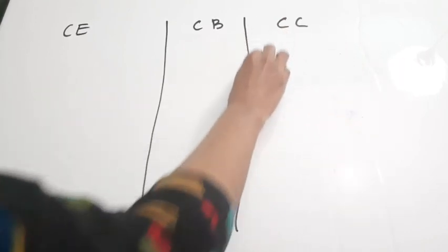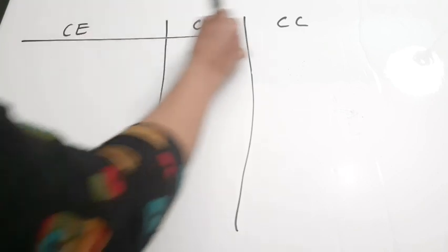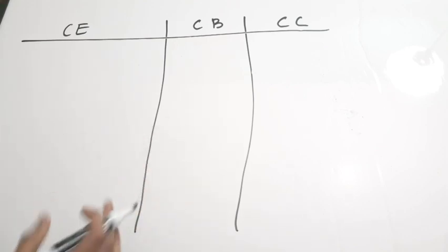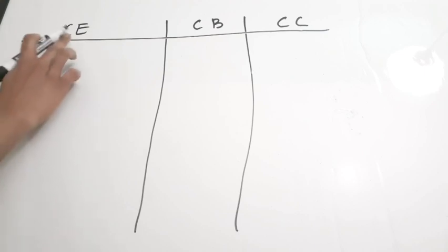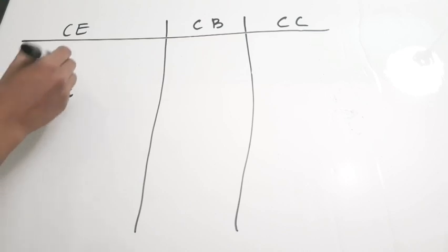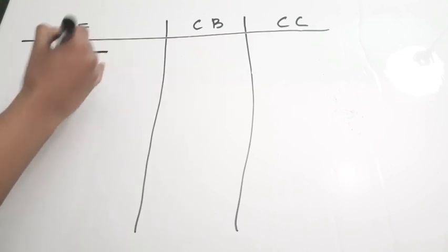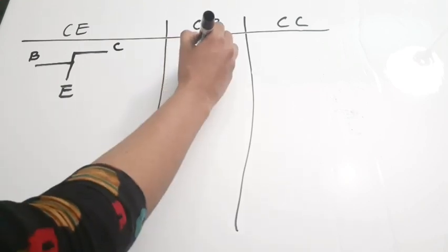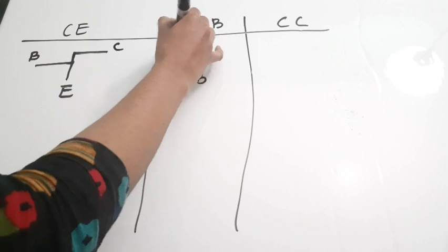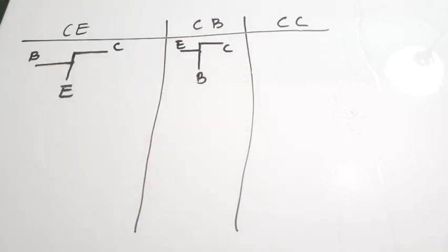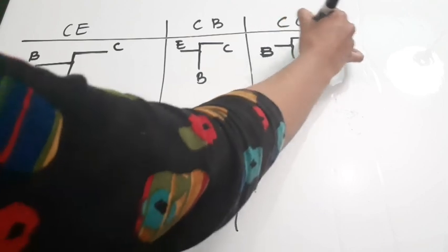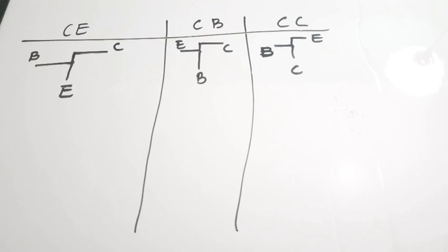Now let us see how the input and output terminals are assigned. For common emitter, the emitter is common — input is base and output is collector. For common base, the base is common — emitter is input and collector is output. For common collector, the collector is common — base is input and emitter is output. One terminal is common, one is input, and one is taken as output.